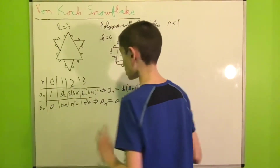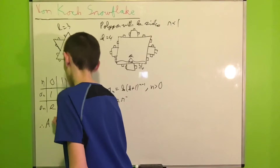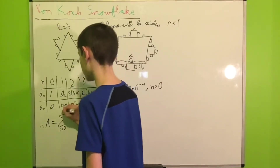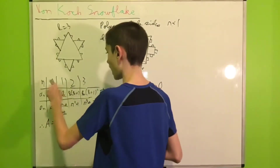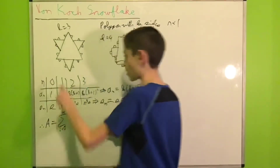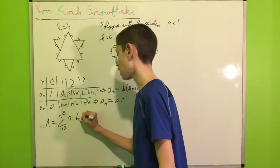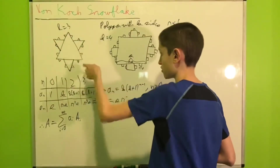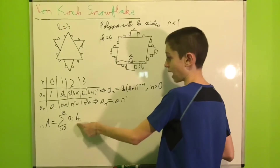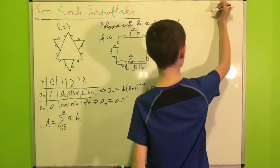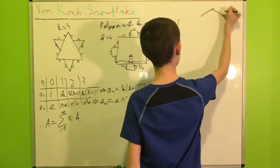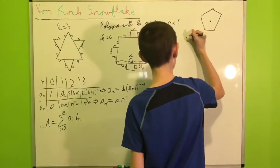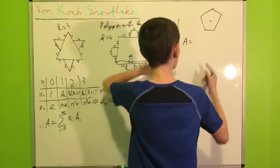The total area will be the sum from i equals zero to infinity of a_i times A_i, where a_i is the number of shapes in iteration i and A_i is the area of each shape in that iteration. To compute A_i we need a formula for the area of a regular polygon, so let's derive that using a pentagon as an example.